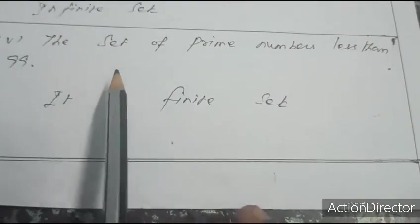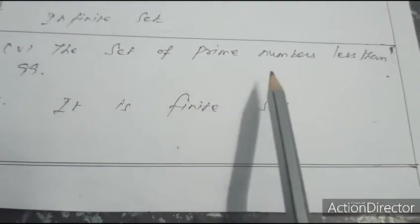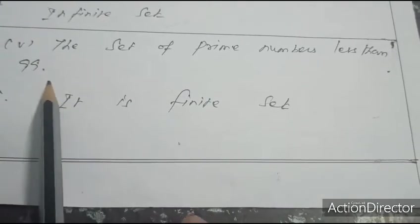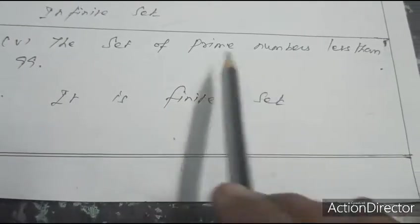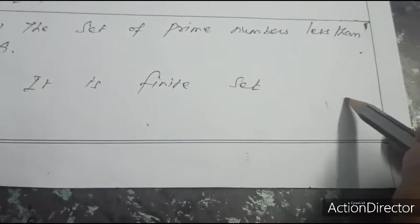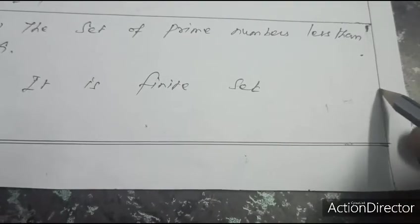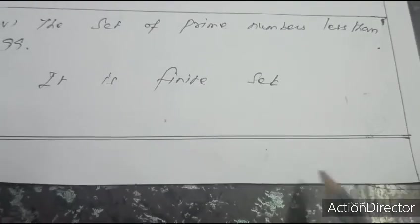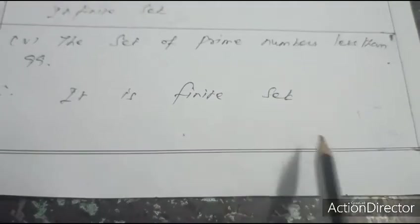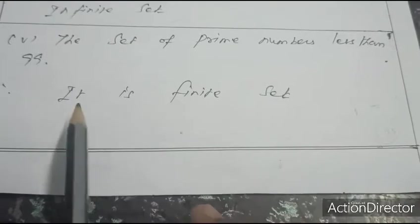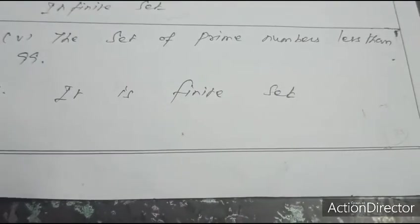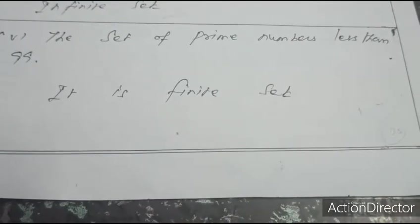Fifth question: the set of prime numbers less than 99. It is a finite set. There are 25 prime numbers only below 99; they are countable elements. Therefore it is a finite set.